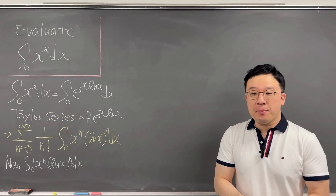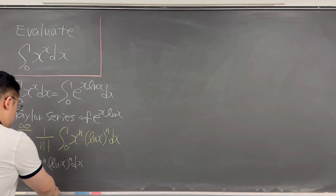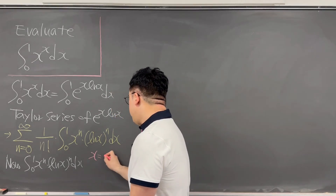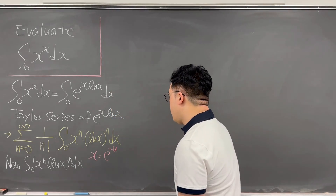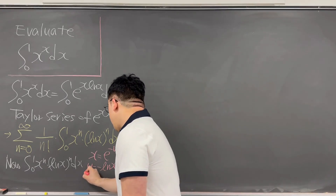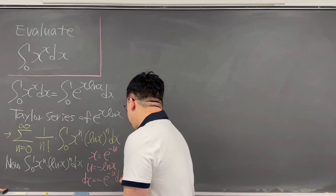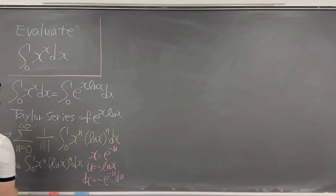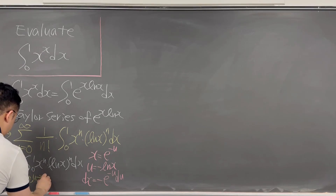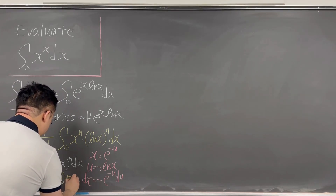Now we can talk about this integral from zero to one of x to the power of n times ln x to the power of n dx. This can be solved by using integration by parts, or we can use a simple substitution — I think substitution works better. The substitution I'll be using is x equals e to the power of negative u, so that u equals negative ln x, and dx equals negative e to the power of negative u du. When x goes to zero, u goes to infinity, and when x goes to one, u goes to zero.